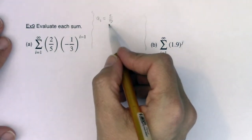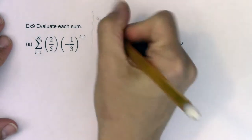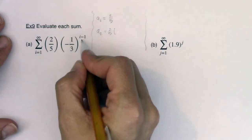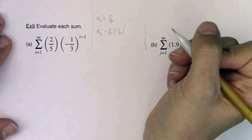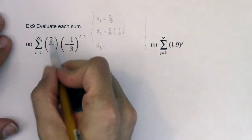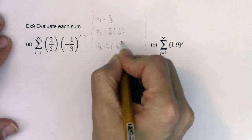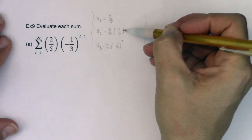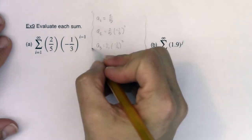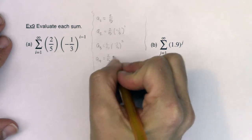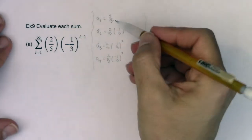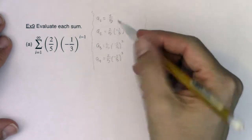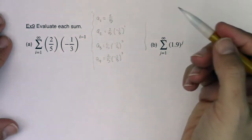I want you to see a sub 2. If i is 2, this stays 2/5 and this becomes negative 1/3 to the 2 minus 1, so negative 1/3 raised to the first power. A sub 3 is 2/5 times negative 1/3 squared. To go from a sub 1 to a sub 2 I multiplied by negative 1/3, and from a sub 2 to a sub 3 I multiplied by another negative 1/3. When you multiply by a constant or common ratio, you have a geometric sequence.